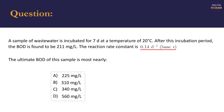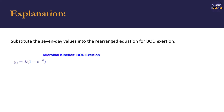Lowercase k typically refers to constants in base E, whereas uppercase K refers to constants in base 10. The BOD exertion equation expects the constant to be given in base E, so we won't have to convert it for use in the equation.